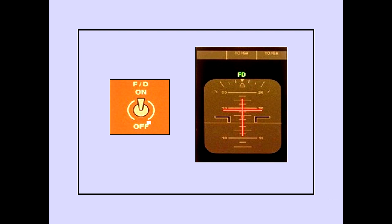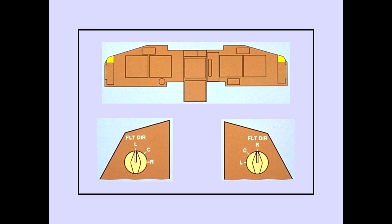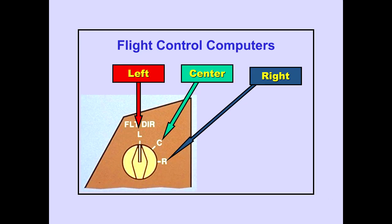There is an on-off switch for each pilot's flight director display. When either switch is selected on, the command bars and FD are displayed on the respective PFD. The flight director's source selectors are located on the pilot's panel for each pilot's flight director. The source selectors determine which flight control computer operates each pilot's flight director. These flight control computers are the same three that provide inputs to the autopilots.